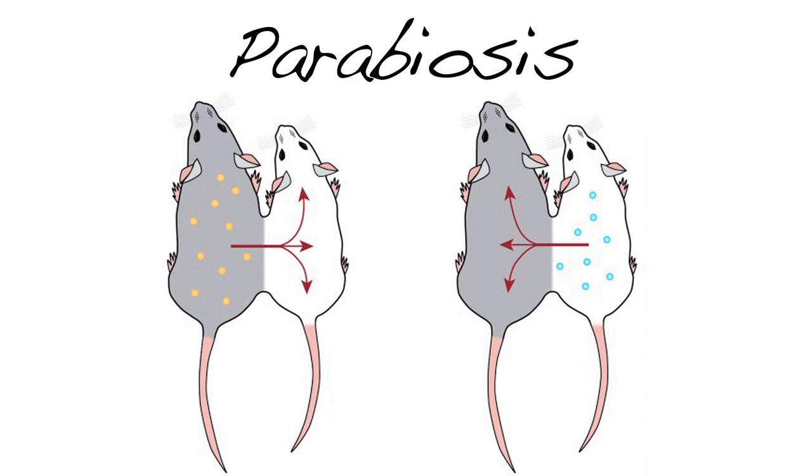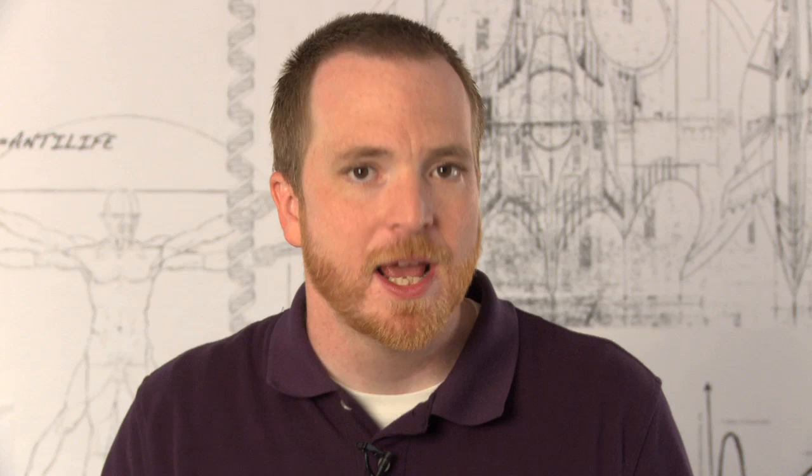This is called parabiosis, and it was first done in the 1950s with rats by a scientist named Hank McCoy, excuse me, Clive McKay. Sometimes I get my fictional and non-fictional super scientists mixed up. McKay combined the circulatory system of an older rat with that of a younger rat, and what he found was the cartilage of the older rat became healthier and more youthful. But he didn't know why.